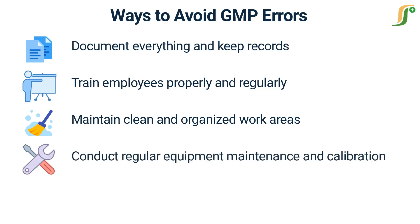Conduct regular equipment maintenance and calibration. Regular equipment maintenance and calibration are necessary to ensure that equipment is functioning properly and producing accurate results. This includes cleaning, inspecting, and testing equipment on a regular basis, as well as calibrating instruments and tools to ensure accurate measurements.